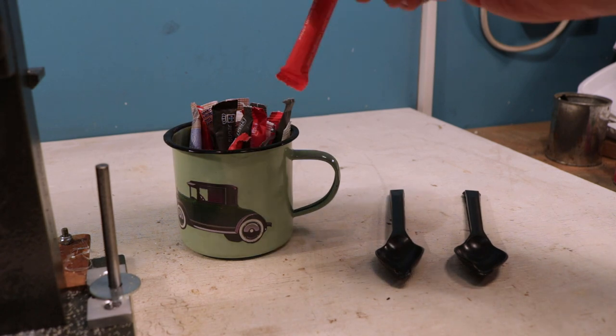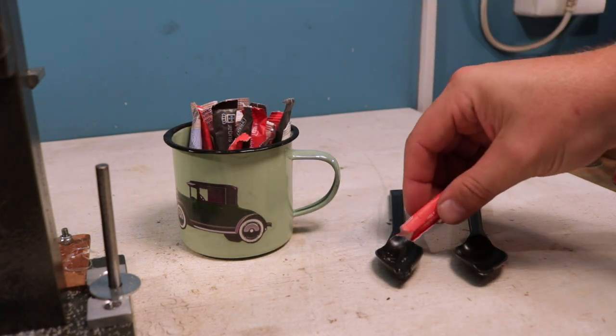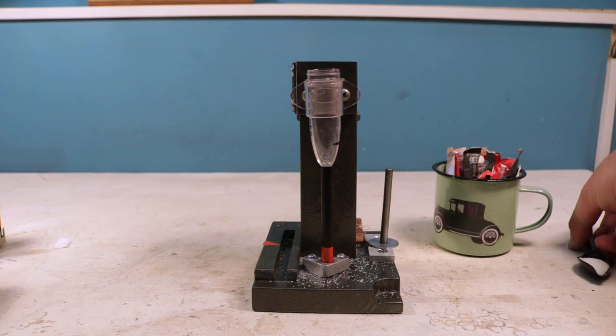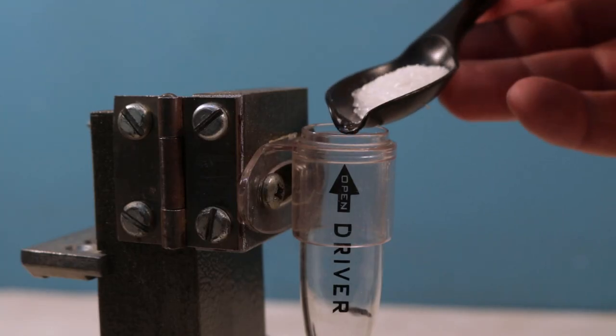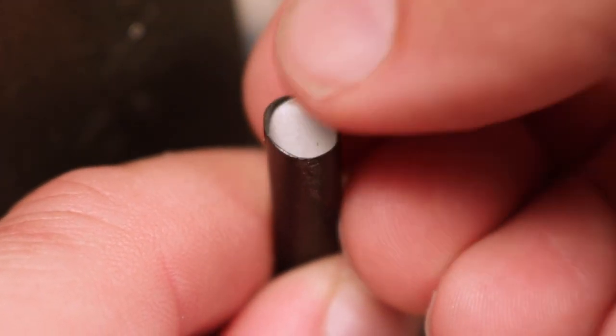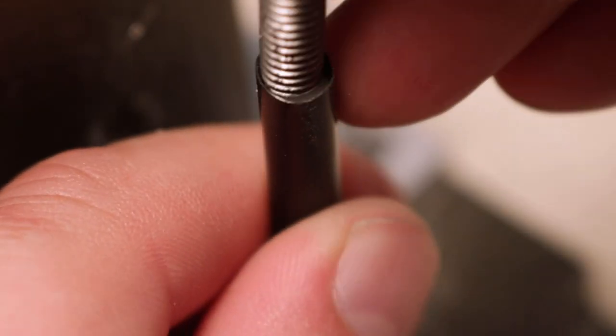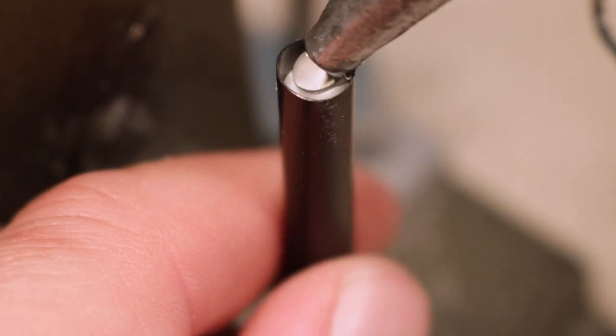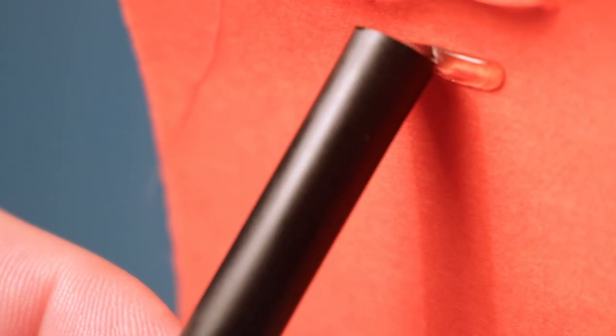Fill the open end of the cigarette with the contents of one half sachet of sugar. Ram the end cap wadding in place. Fill the end with hot glue. Wipe off the excess glue and leave to cool.